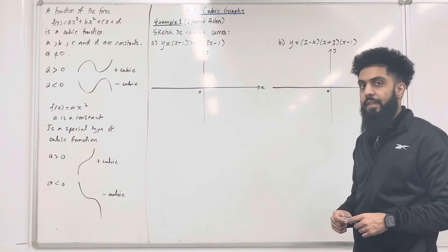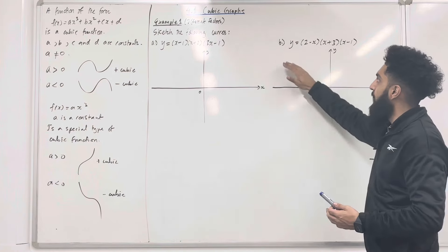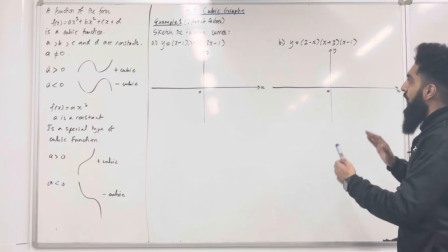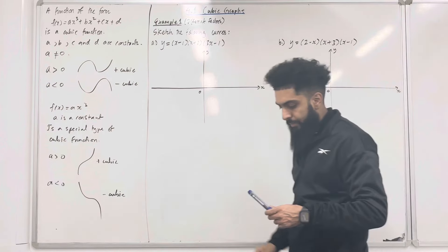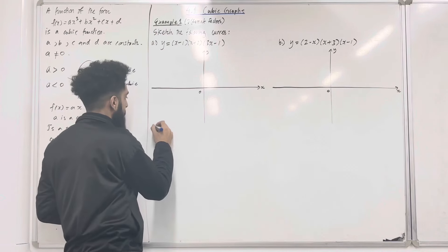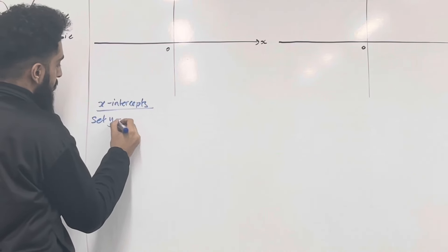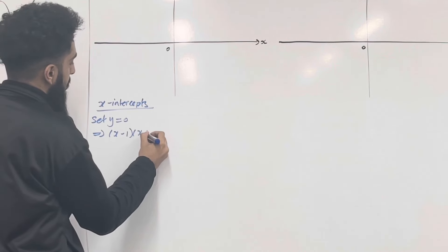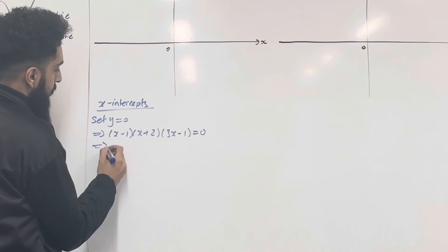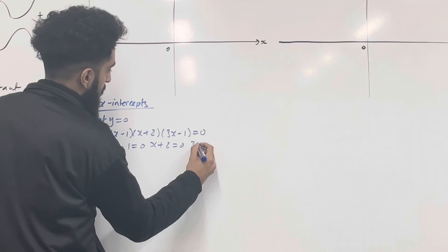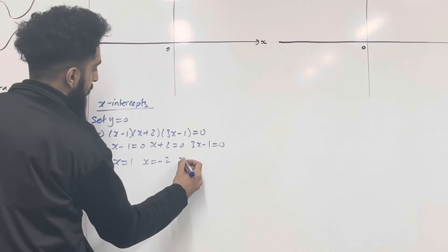Example number 1: different factors. Sketch the following curves. Part A: y equals (x minus 1)(x plus 2)(3x minus 1). Part B: y equals (2 minus x)(x plus 3)(x minus 1). In both parts we notice that we have three different factors. For part A, I'm going to start by finding the x-intercepts. We set y equal to 0, which implies that (x minus 1)(x plus 2)(3x minus 1) equals 0. Setting each bracket equal to 0 and solving gives us x equal 1, x equal negative 2, and x equal one third.